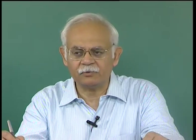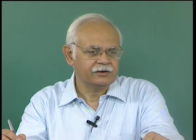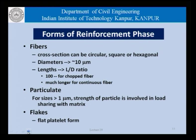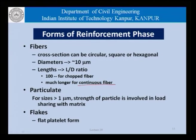In certain cases with unbonded construction, we do not care about the bond as much. As far as the reinforcement in CFRM is concerned, it could be in the form of fibers whose cross section could be circular, square or hexagonal. The diameters are very small, of the order of about 10 micrometers. The aspect ratio L/D is about 100 for chopped or short fibers used in fiber reinforced concretes, and much longer for continuous fibers — which is the focus of today's discussion.